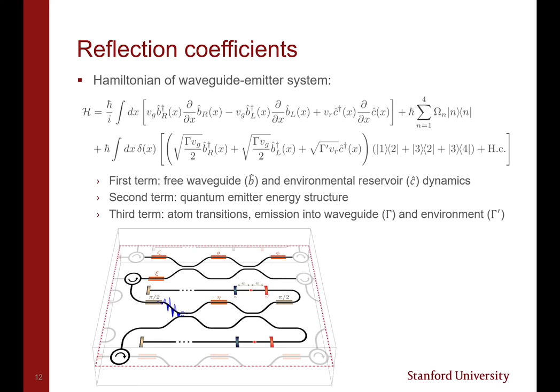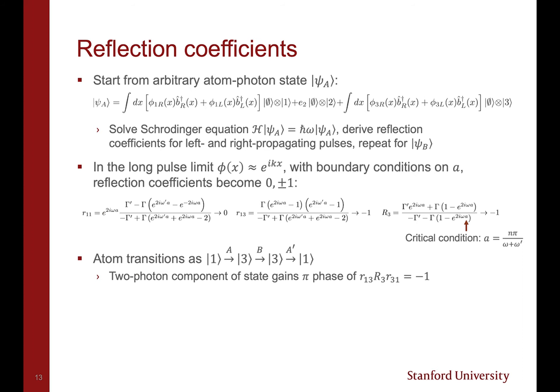To see why this is the case, consider the Hamiltonian of the waveguide-emitter system, which is shown here. The first term describes the dynamics of the waveguides, represented by the B operator, and the reservoir that models the environment, represented by C. The second term describes the energy structure of the quantum emitter, and the third term describes the atom transitions and emission of a photon into the waveguide, coupled as γ, and into the environment, coupled as γ′.